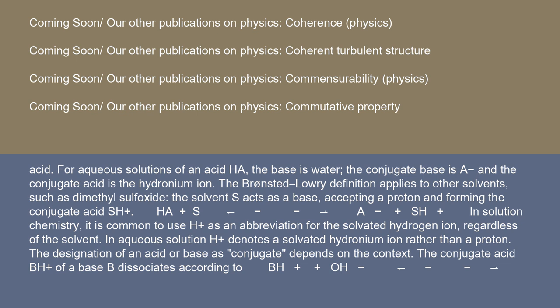The solvent S acts as a base, accepting a proton and forming the conjugate acid SH⁺: HA + S ⇌ A⁻ + SH⁺. In solution chemistry, it is common to use H⁺ as an abbreviation for the solvated hydrogen ion, regardless of the solvent. In aqueous solution, H⁺ denotes a solvated hydronium ion rather than a proton.